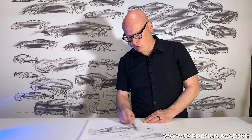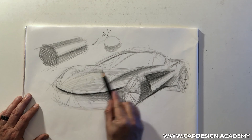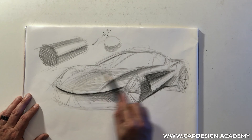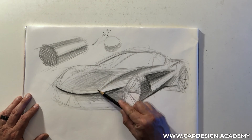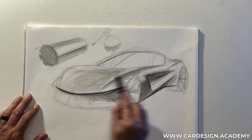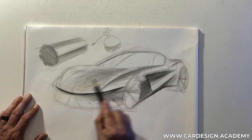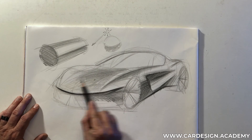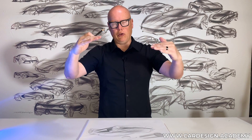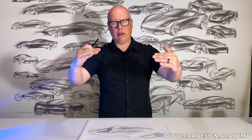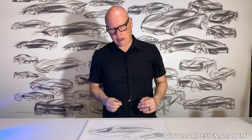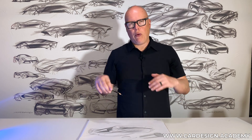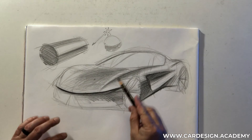This is where it gets a little tricky because we're using the side of the pencil to do this really soft, gradual gradation, so we just have to build it up slowly. As the bonnet or hood comes down closer to the horizon line, it's going to get lighter again, because it's going to be reflecting more of that white atmosphere around the base of the horizon.